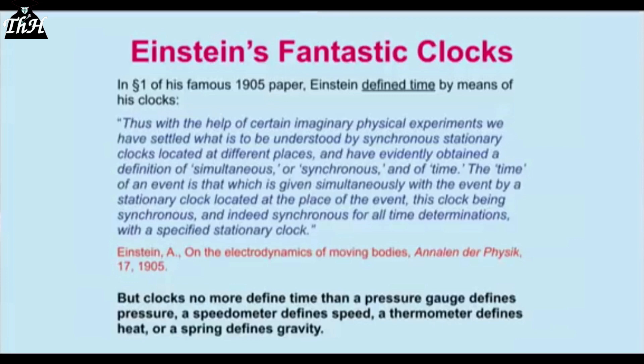He defines time by means of clocks. But do clocks define time? No more than a pressure gauge defines pressure, a speedometer defines speed, a thermometer defines heat, or a spring defines gravity. Measuring instruments are invented to measure something other than themselves. If a measuring instrument measures only itself, it's hopeless. Einstein's clocks measure only themselves. He has dispensed with any physics external to the measuring instrument and defines time in terms of his clock — and so his fantastic clock can do whatever it likes, independent of any physical reality.